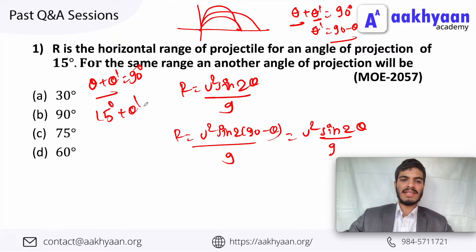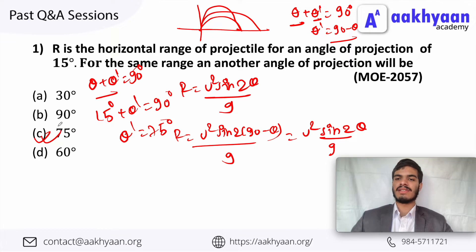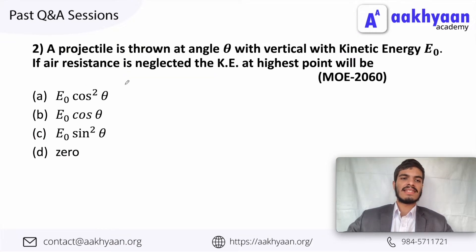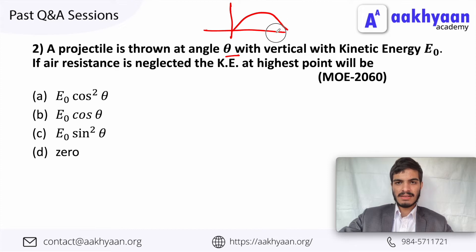In the next problem, a projectile is thrown at angle theta with the vertical. In this case we have to change the angle theta to work with the vertical angle. This angle theta is measured from the vertical.